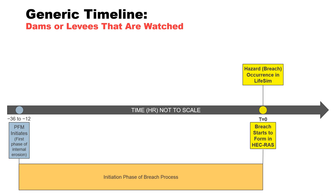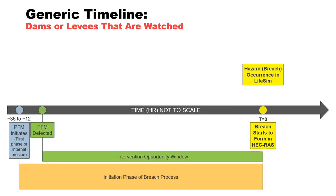The timeline begins with failure mode initiation — for example, the amount of observed material movement suggests a pipe has initiated and is progressing towards the reservoir. This defines the beginning of the initiation phase of the breach process. For this example, it is shown occurring 36 to 12 hours before the breach starts to form, and therefore represented as negative values. Assuming adequate training and surveillance, the failure mode is likely to be detected shortly after initiation. The time period from when the failure mode is detected up until recognition that breach is virtually certain to occur is the window of opportunity for intervention actions to arrest the failure mode development.